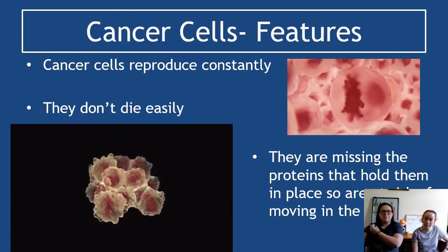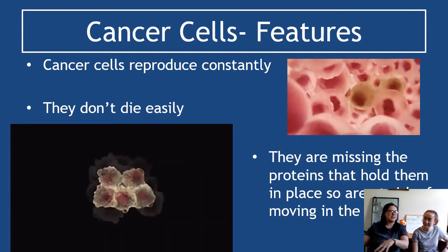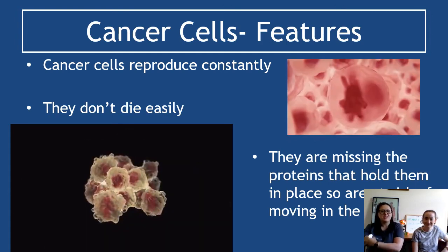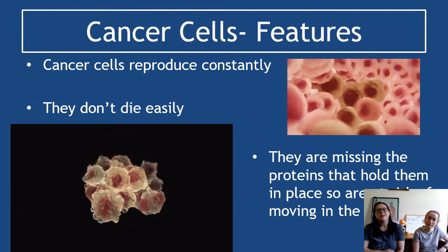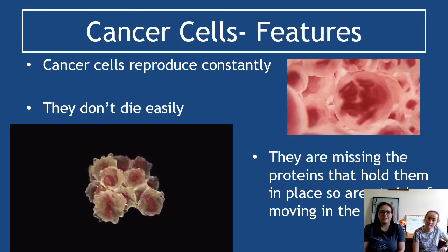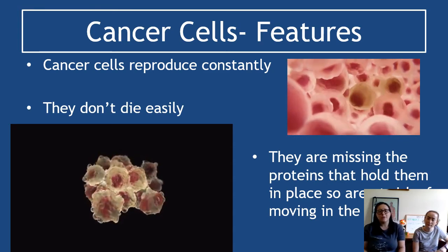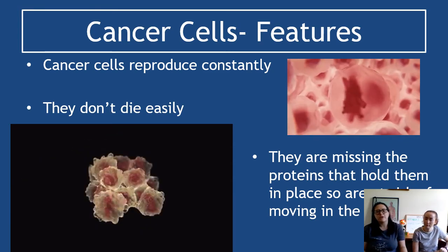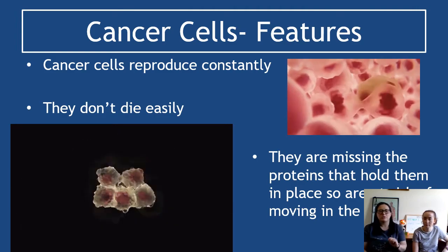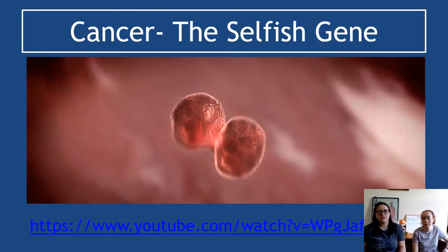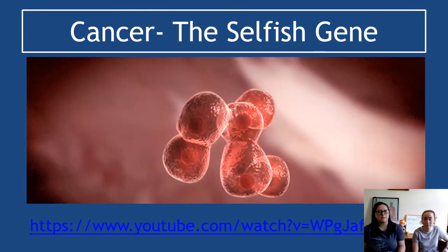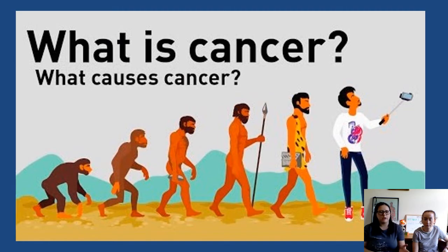Normal tissues stick to each other — muscle cells stay where they're supposed to be. Cancer cells don't do that; they don't adhere well to each other. As a result, they can break off and flow through the bloodstream, causing problems we'll discuss later. The video 'Cancer: The Selfish Gene' looks at some of the mechanisms of cancer and how it works.